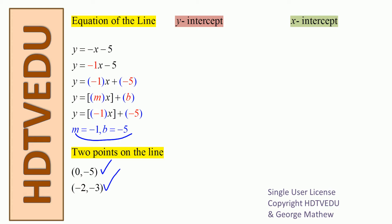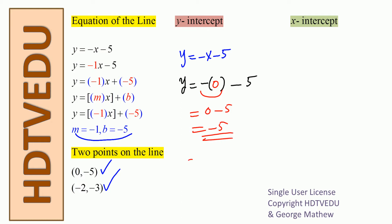How do we find the y-intercept? We have y equals negative x minus 5. Where does the graph touch the y-axis? On the y-axis, x is equal to 0. So we substitute 0 for x, and this whole thing becomes 0 minus 5, which is negative 5. So the y-intercept point is 0, negative 5.